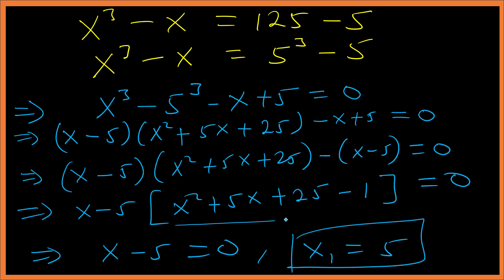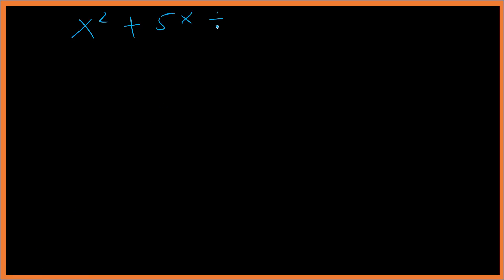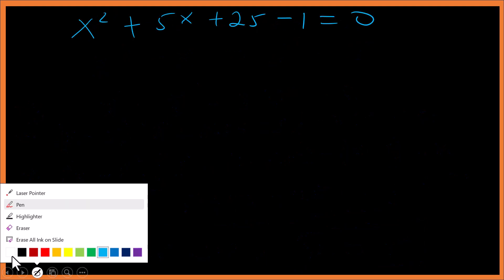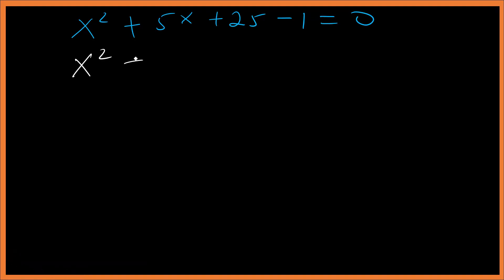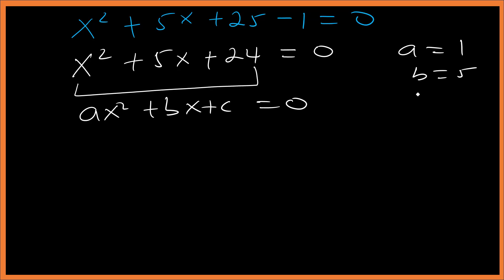Now let's focus on x² + 5x + 25 - 1 = 0, which is x² + 5x + 24 = 0. This is a quadratic with a = 1, b = 5, and c = 24.